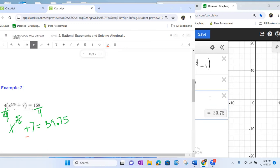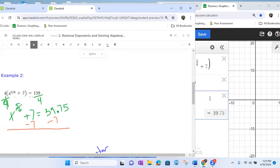We're going to get rid of that positive seven by subtracting seven. So that's going to be our next piece. We're going to use the opposite of that positive seven. When we do that, seven minus seven cancels. And then we're going to be left with x to the 5 sixth equals to 39.75 minus seven. Looks like that should be 32.75.